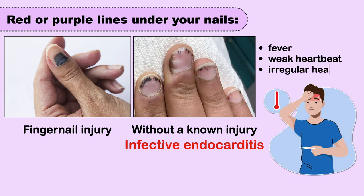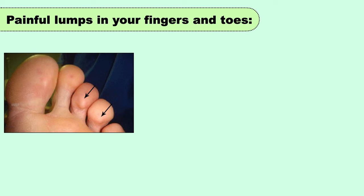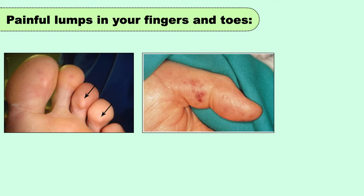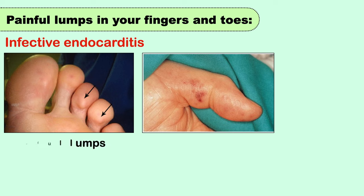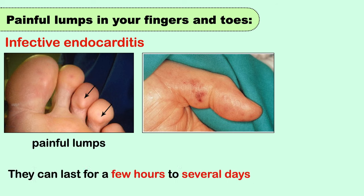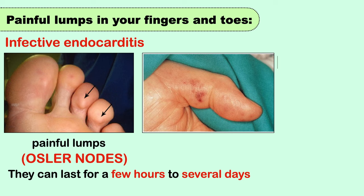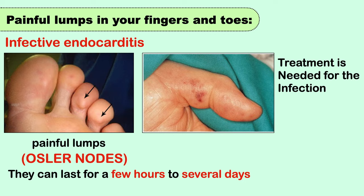When fingernail streaks are a symptom of a heart condition, they are usually accompanied by other symptoms like fever, weak heartbeat, or irregular heartbeat. If you have a heart infection known as infective endocarditis, several painful lumps can develop in your fingers and toes, lasting from a few hours to several days. In medical terms, these lumps are called Osler nodes. They go away on their own, but the patient needs treatment for the infection.